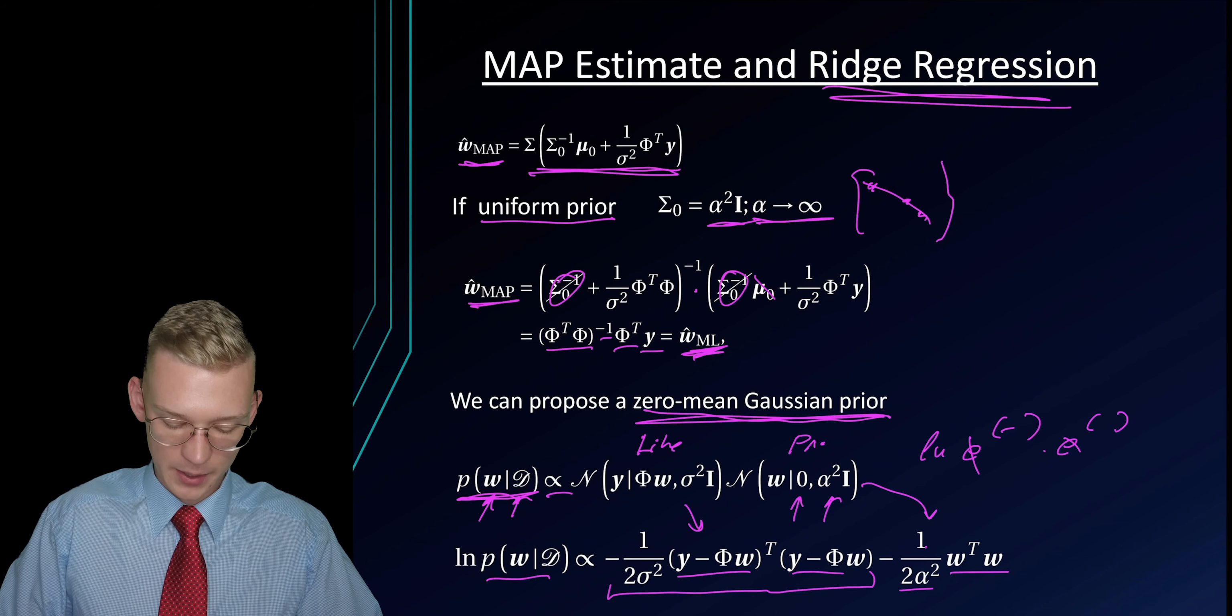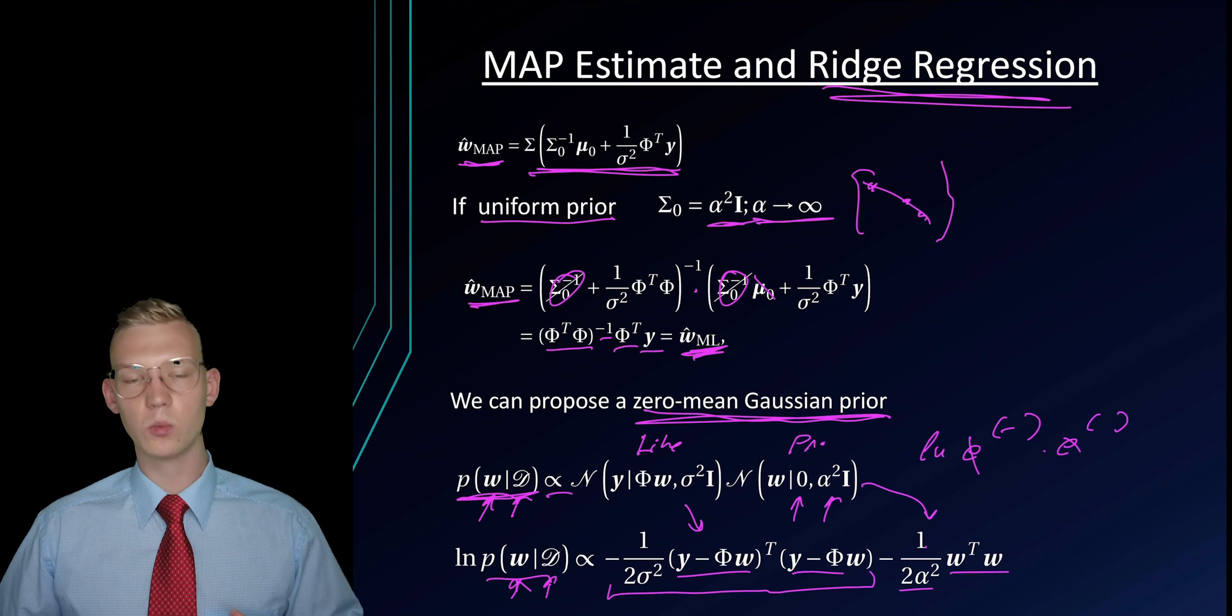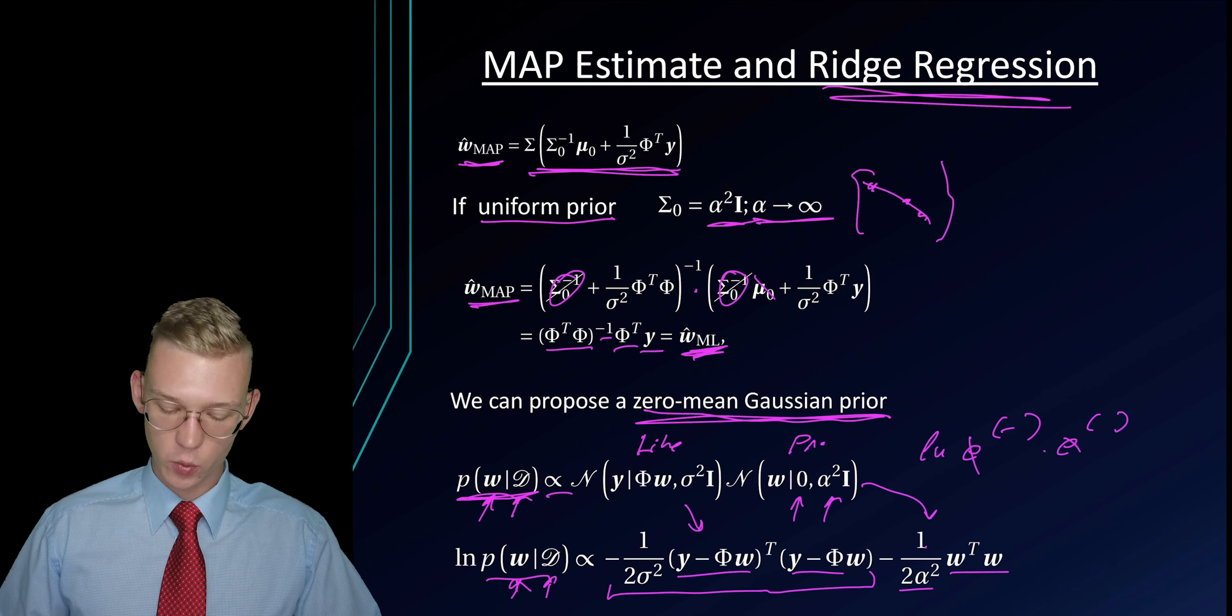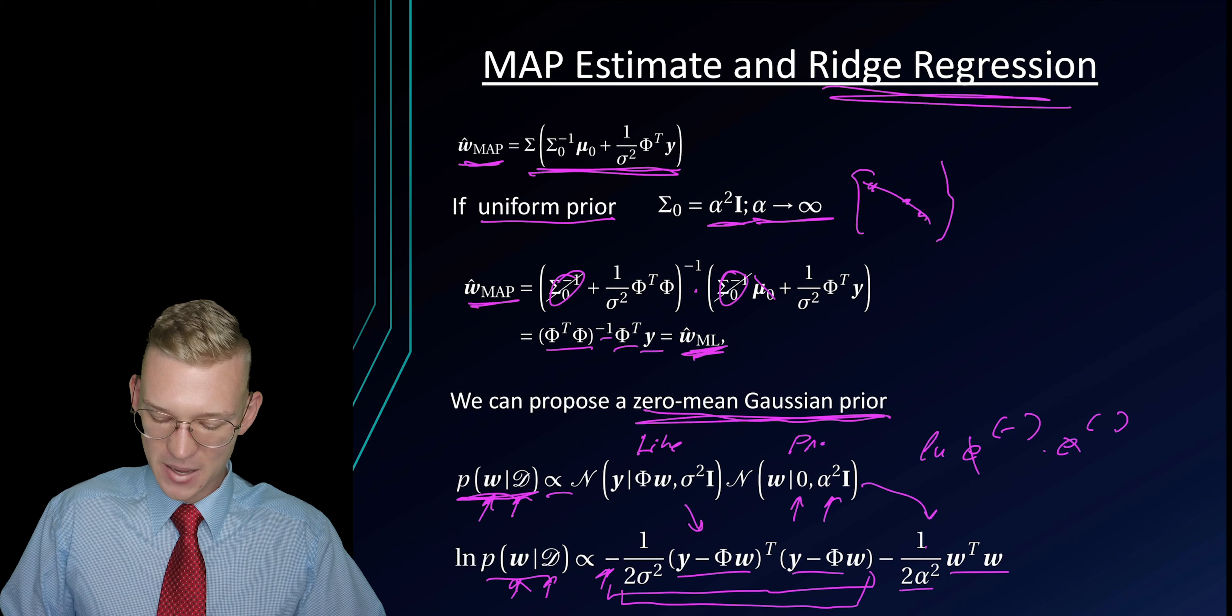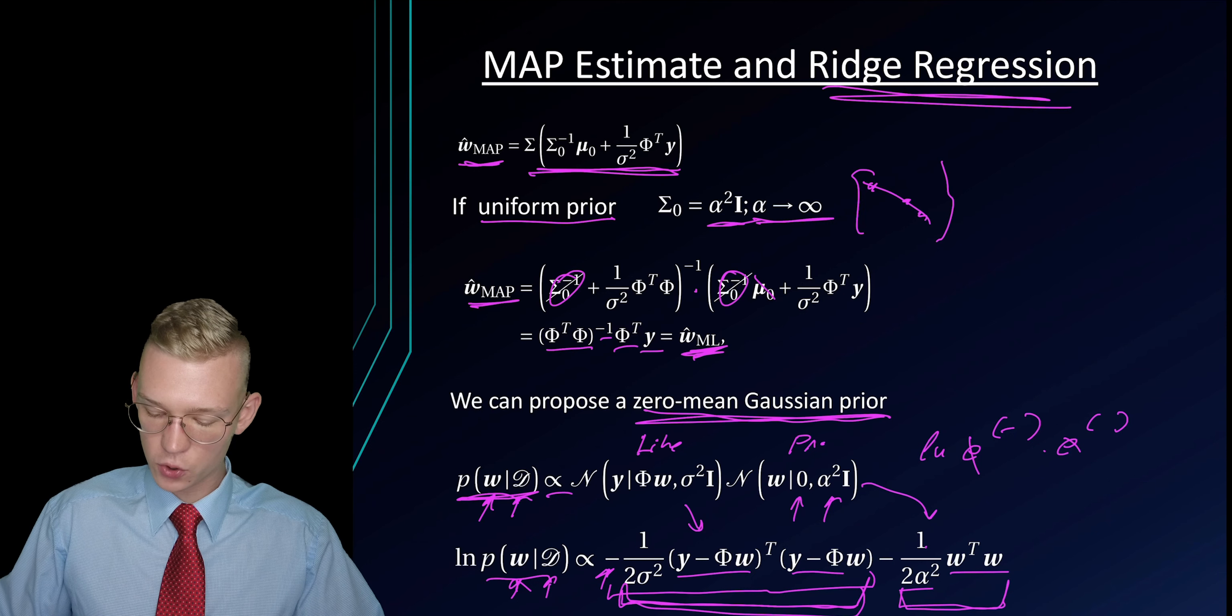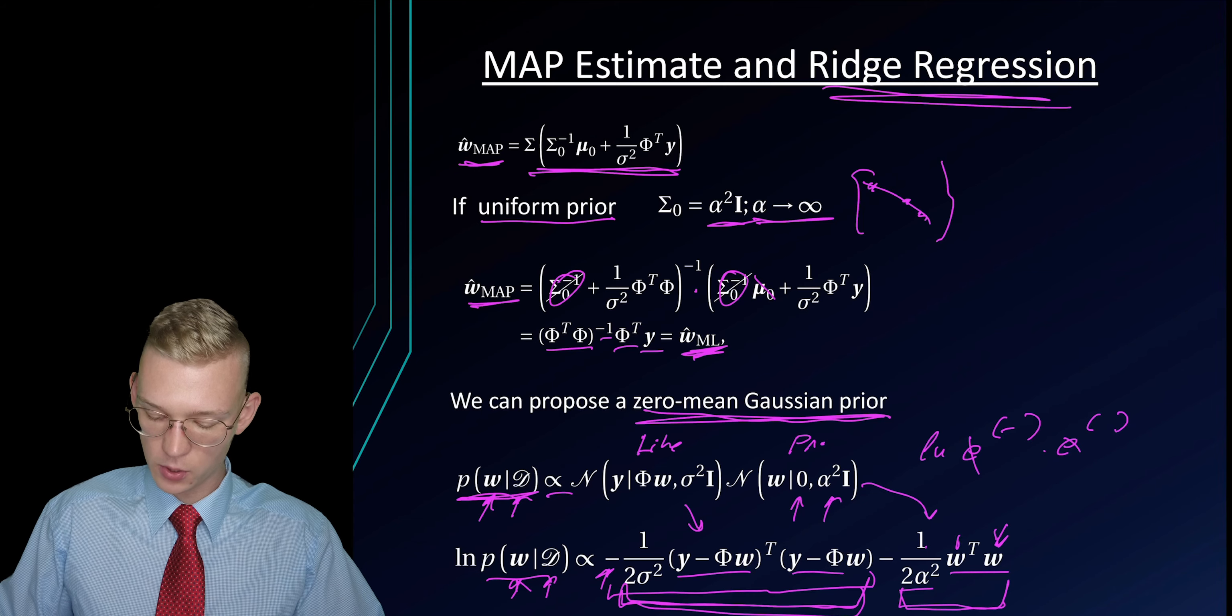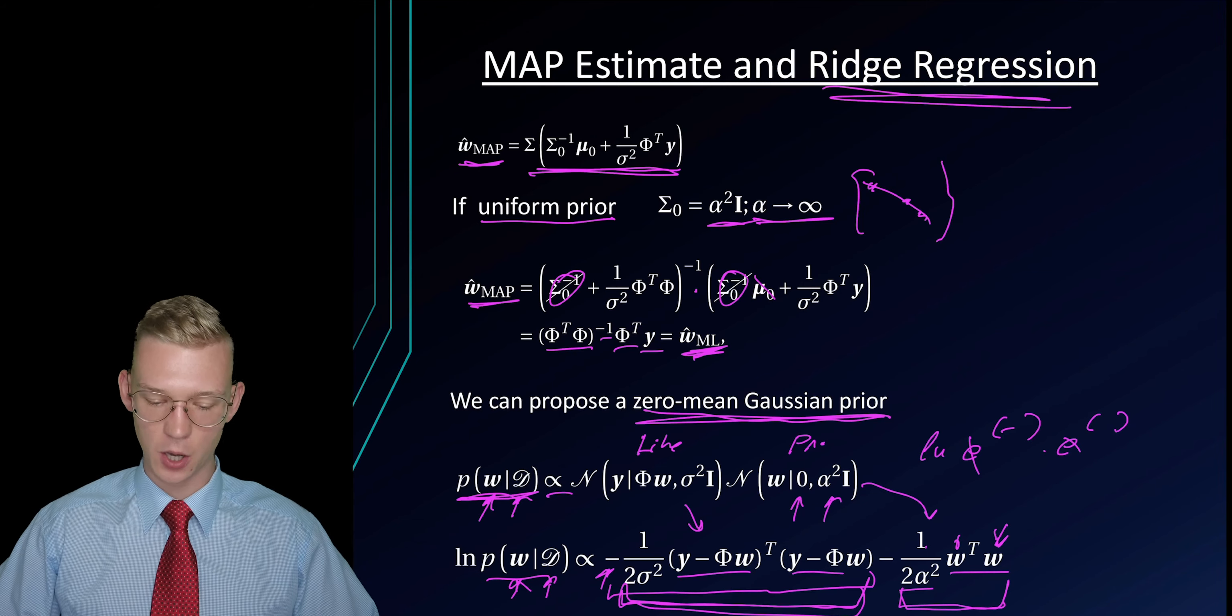This is now the probability of our parameters given some data and we want to maximize that. How do we maximize it? Because we have a negative here, we need to minimize these two terms. We have to choose our parameters w such that these two terms are as small as possible.